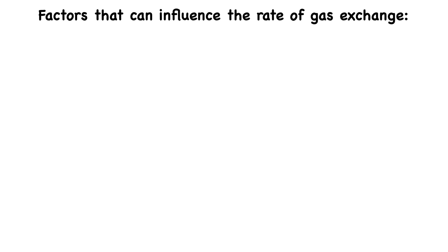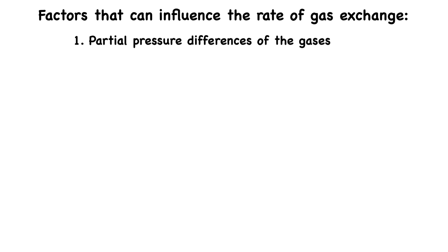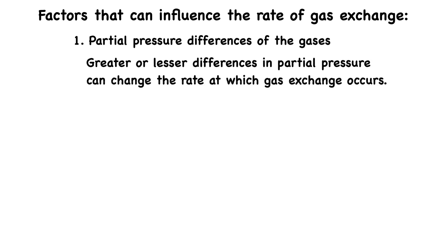Let's also explore some factors that influence the rate of gas exchange, both in your lungs — pulmonary — and throughout your body — systemic. The first factor is the partial pressure differences of the gases. Gas exchange occurs because of differences in partial pressures. Oxygen and carbon dioxide move from areas of higher to lower pressure. Greater or lesser differences in partial pressure can change the rate at which gas exchange occurs.